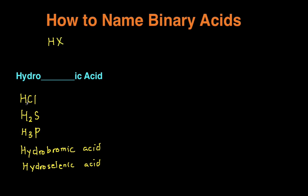And I have a couple examples right here of binary acids: HCl, H2S, H3P. You can see in each of these, they have an H and one other element, but you can have multiple Hs.